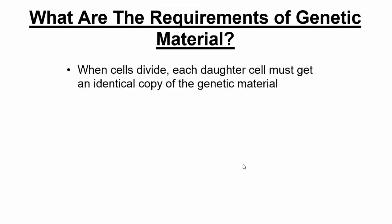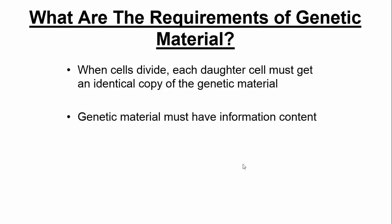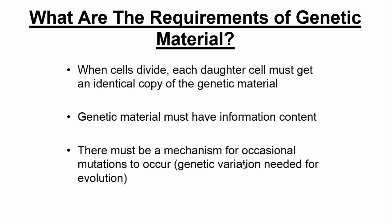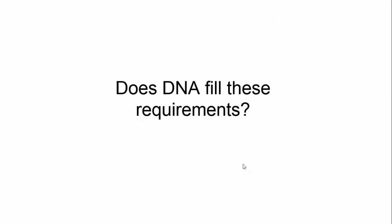What are the requirements of genetic information? Does DNA meet them? When a cell divides, each daughter cell must get an identical copy — DNA can do that. The genetic material must have information content — DNA has bases A, T, C, G, and you can write a code. There must also be a mechanism for occasional mutations. You want fidelity with DNA replication — you want it to replicate accurately — but you do not want complete fidelity. You want an occasional chance for error, for mutation to occur, because that adds genetic diversity into the gene pool. DNA meets all of these requirements.